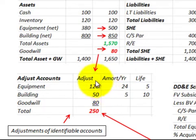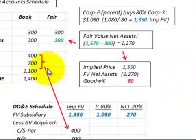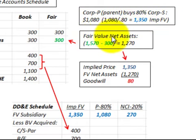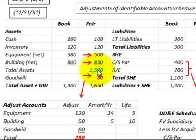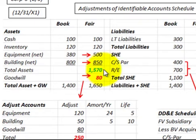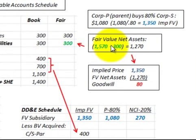It is important that we set up this adjustments accounts schedule — it has to be accounted for in the consolidation process. Corp P, the parent, buys 80% of Corporation S, so we have to determine the fair value of the net assets. From the balance sheet, the fair value of assets was $1,570,000 and total liabilities were $300,000, giving a fair value of net assets of $1,270,000.